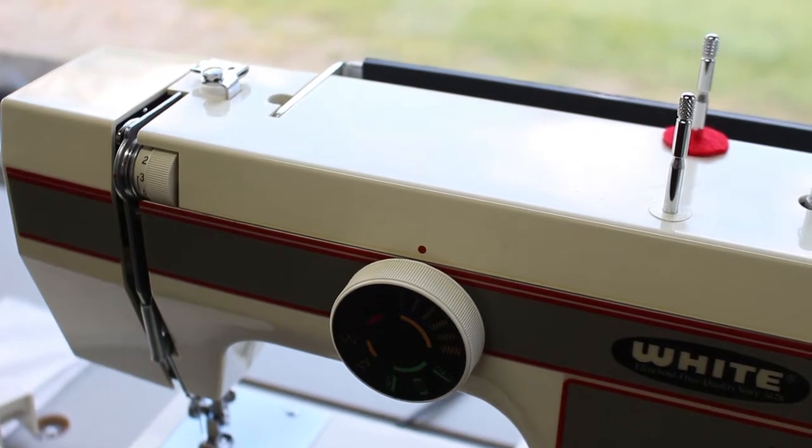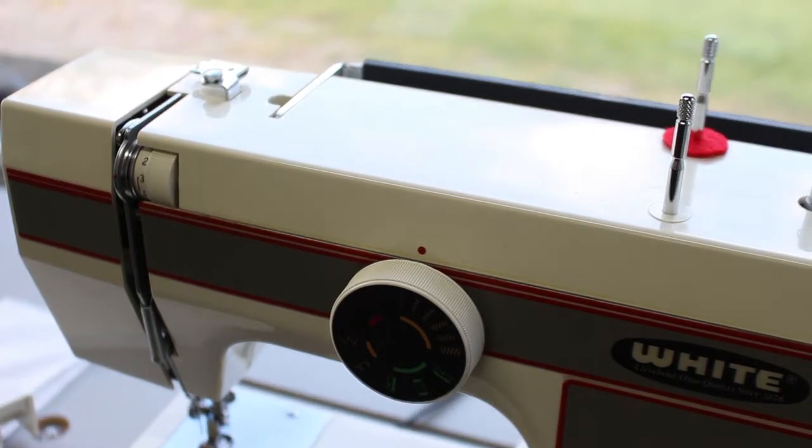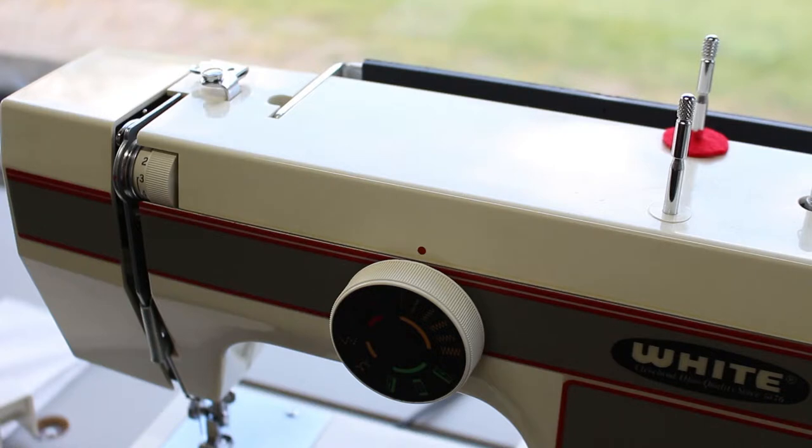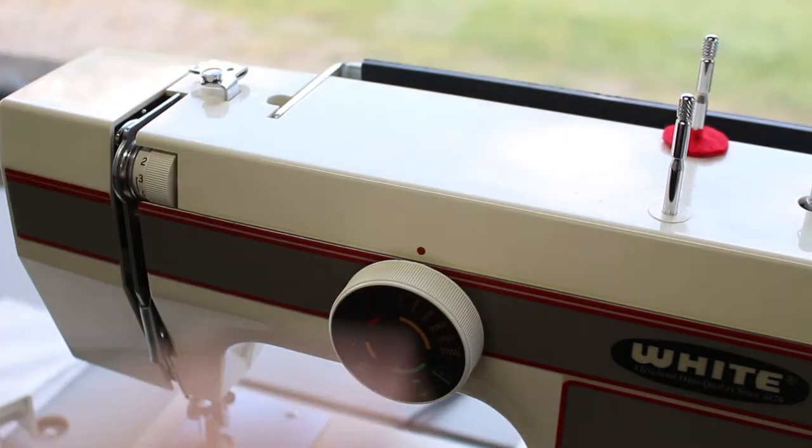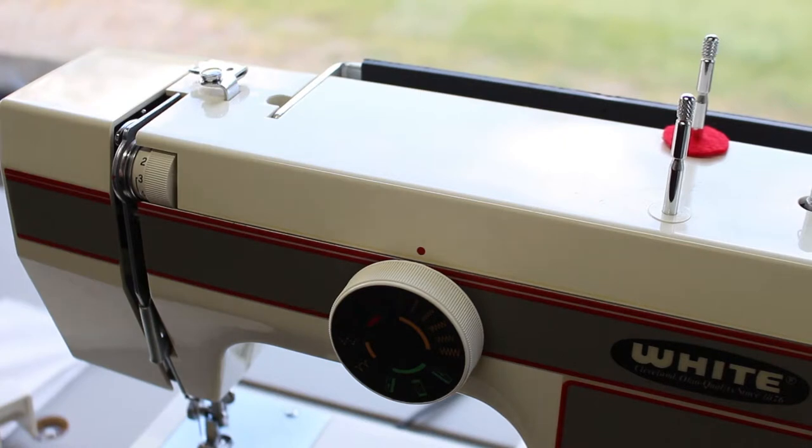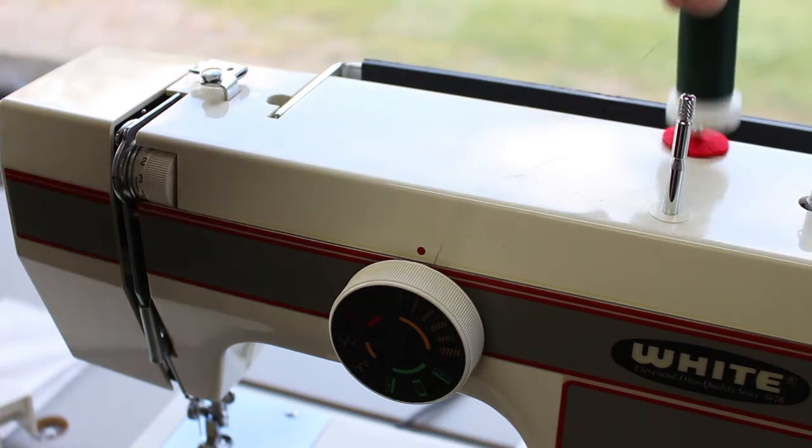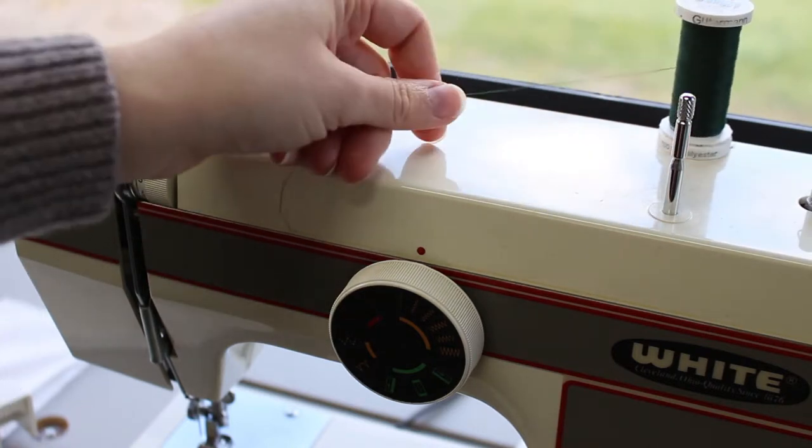Most machines are very similar in how they thread. Things may be in a different position on the machine, but for the most part, the actual mechanics of it are the same. Your machine may be slightly different, but you should be able to figure out from this basic threading. From the top, I'm going to put my top thread on first. I have two different colors for my top and my bottom, so we can differentiate where things are when I start sewing on a scrap.